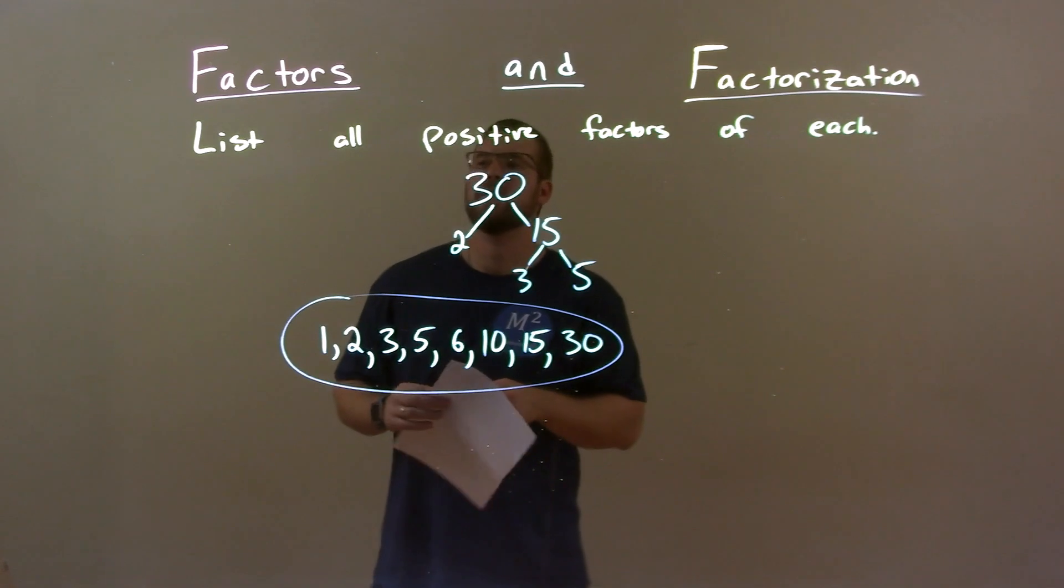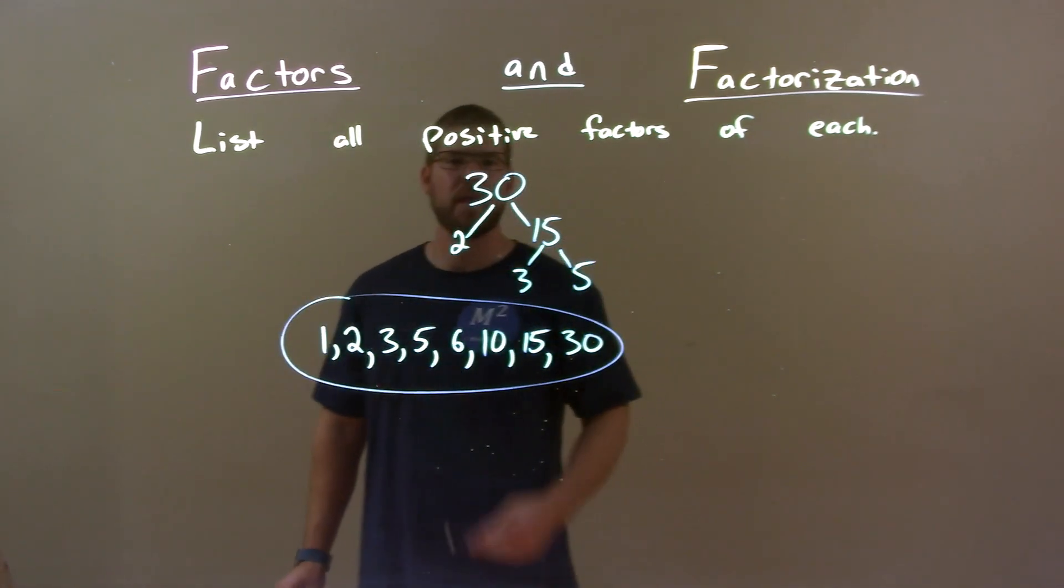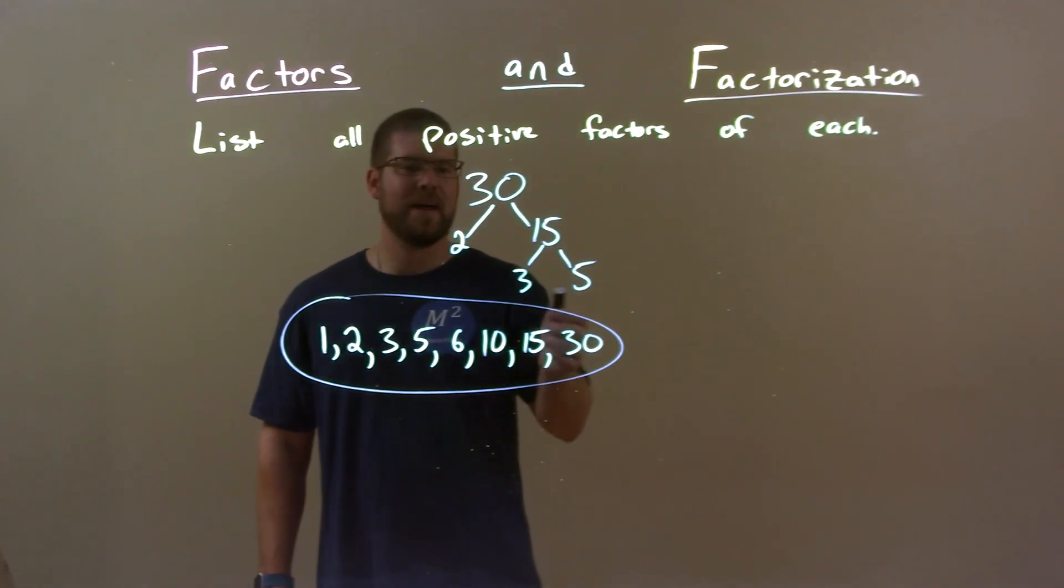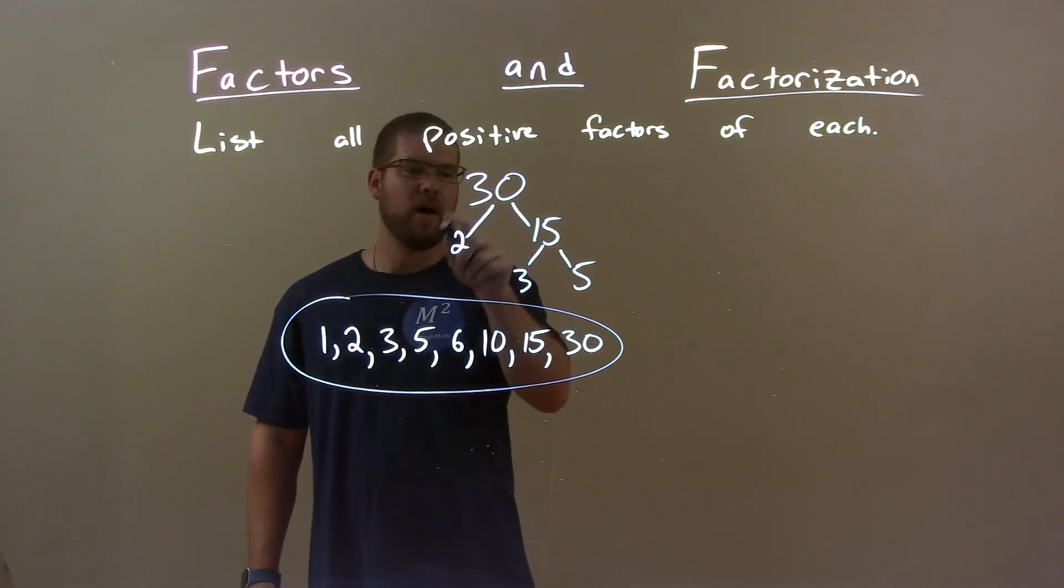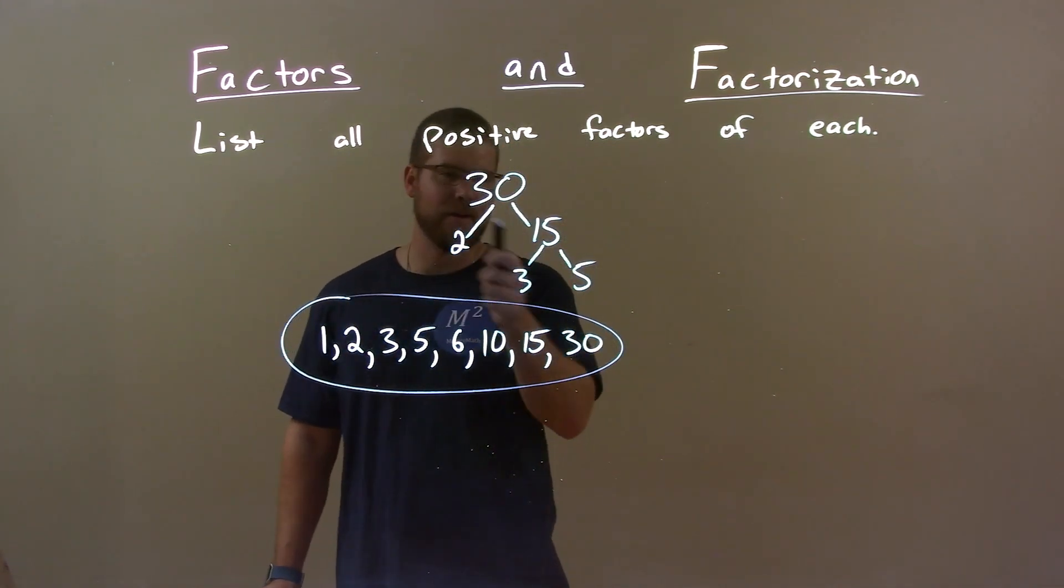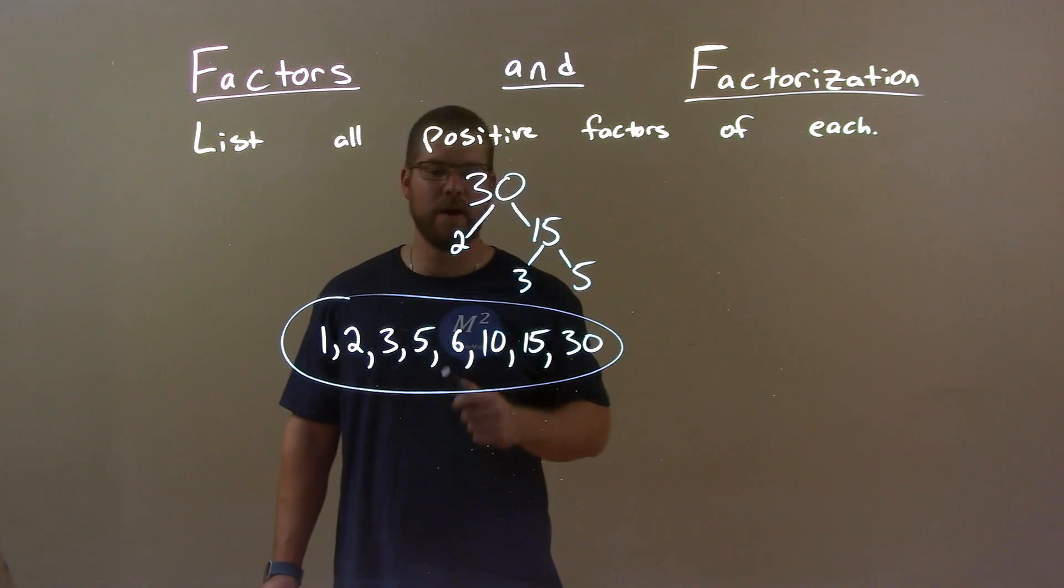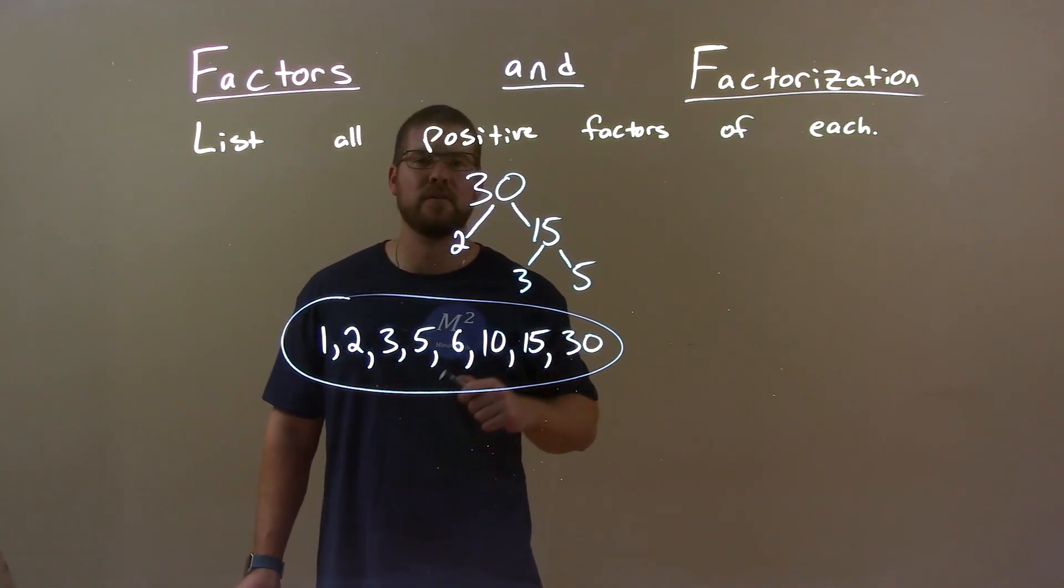Quick recap. We're given the number 30 and we have to list all positive factors of it. I did my prime factorization and then I calculated to see which combination would multiply of the numbers that were given that could get all the numbers up to 15 which is halfway. And I came up with 1, 2, 3, 5, 6, 10, 15, and 30.